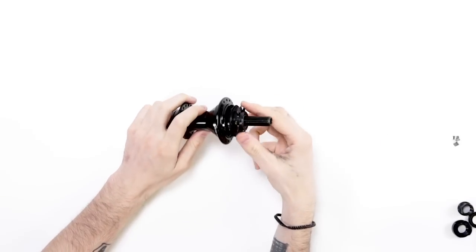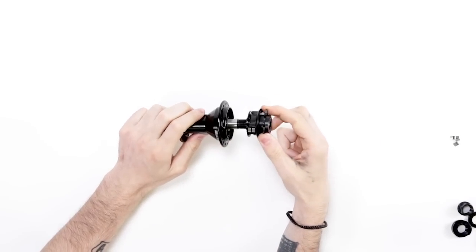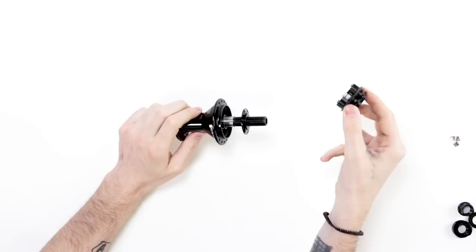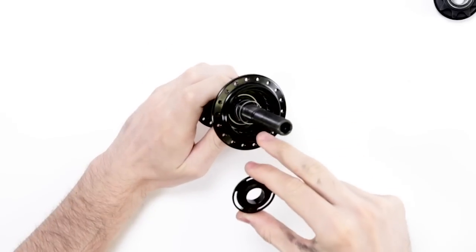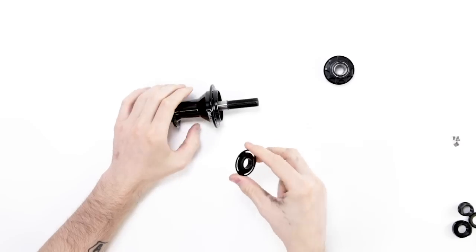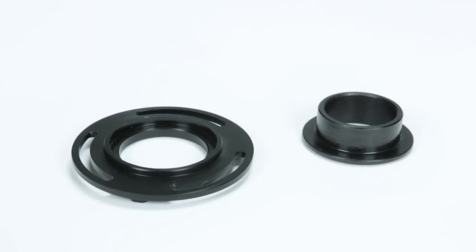Once you've removed the drive side cone you're then going to want to take the driver, give it a little bit of wiggle and slide it off the end of the axle. You're going to want to take the clutch disc out but leave the coil spring still inside the hub. You'll see the clutch disc is actually in two parts, there is the clutch disc and there is the spacer.